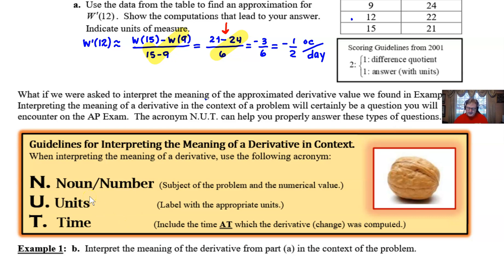So if you have to do this, think about explaining N. N would be the noun, the subject of the problem, along with the number. They both begin with N, so it's going to be very easy to remember. The U is always your units, which we've talked a little bit about already. And the T, which is sometimes the one that's most commonly forgotten, is the time. This would be the time at which the derivative or the change is being computed.